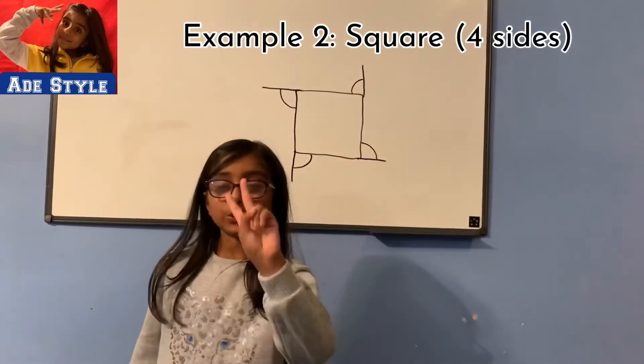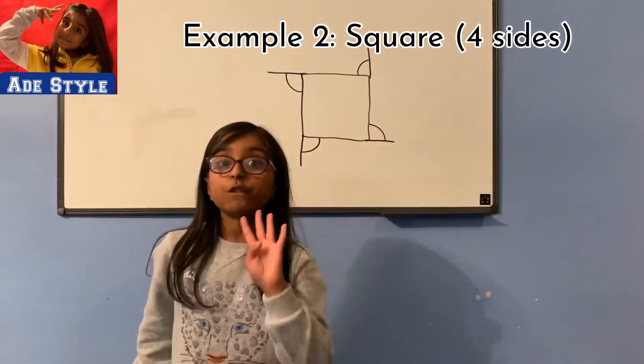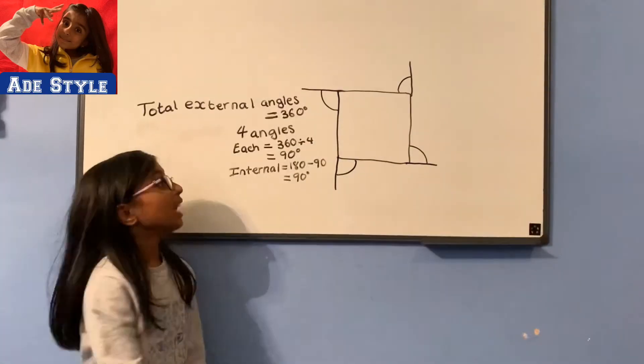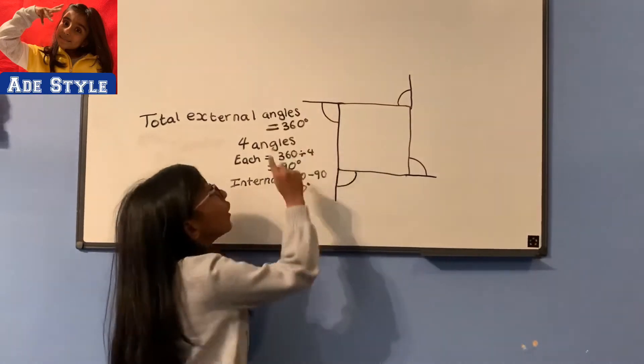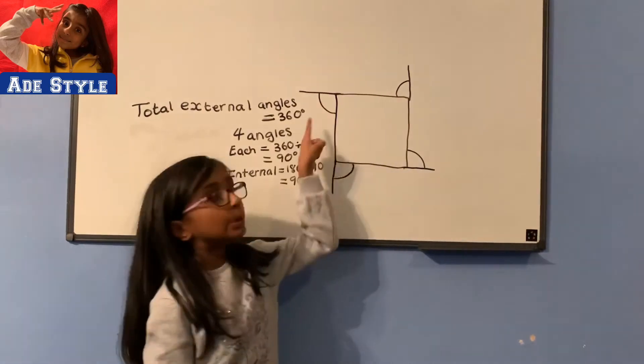Example 2: Square. Why is it a square? Because it has four equal sides. The total external angles equals 360 degrees. There are four angles.